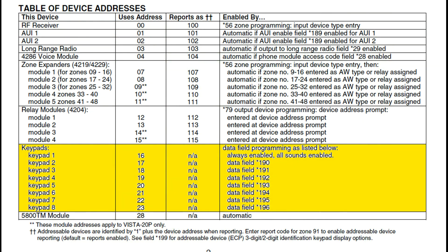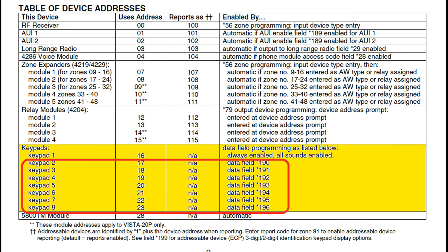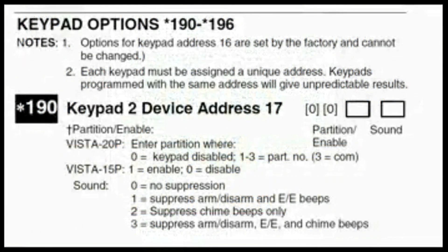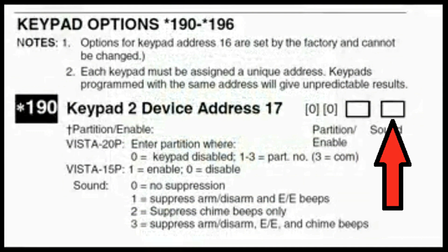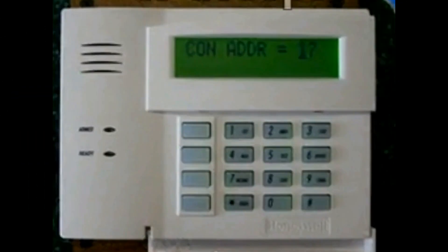If you want to install additional keypads — keypad 2 through 8 — these addresses are not automatically enabled, so it will require just a little more work. The first thing you have to do is tell the Vista you're installing another keypad. For your second keypad, you'll be entering data into data field 190. The third pad is 191, and so on. For the Vista 20, you need two pieces of information: which partition will the keypad be controlling, and what kind of sounds do you want that keypad to make? This field is convenient — for example, for a keypad in a master bedroom, you can suppress the entry-exit beeps so you don't wake your loved ones up if you're coming home late. Then change your second keypad to address 17 and you're up and operating.